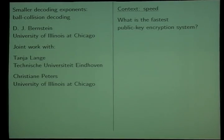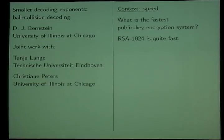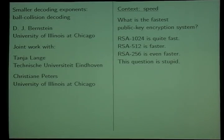Cryptographers have answers to these questions, like: let's give them RSA 1024. That's pretty fast. And actually, we have even faster public key encryption systems, like RSA 512 or RSA 256. We can make really, really fast public key encryption systems.